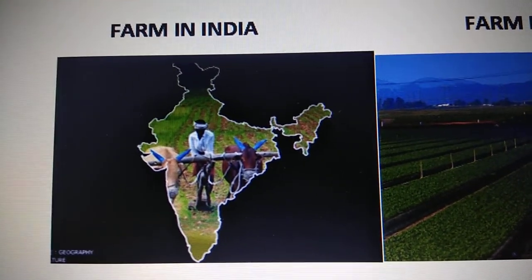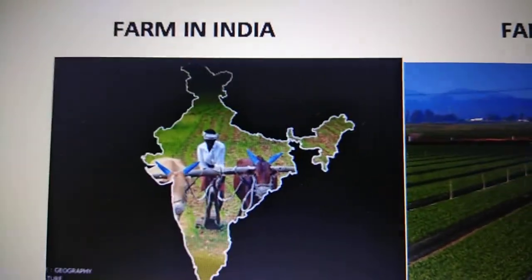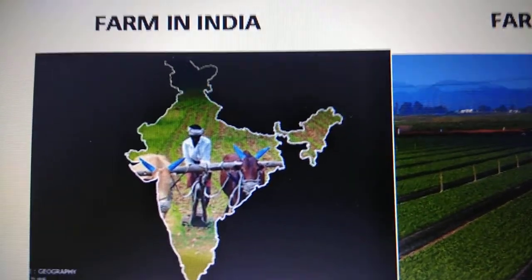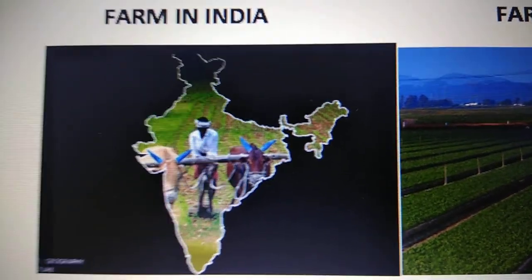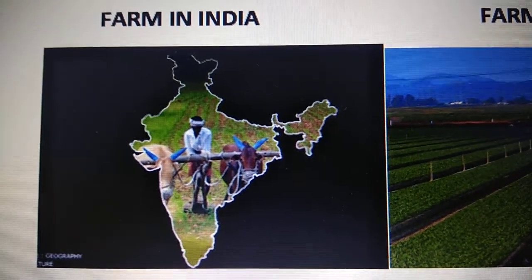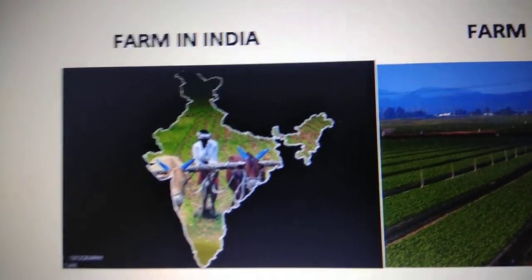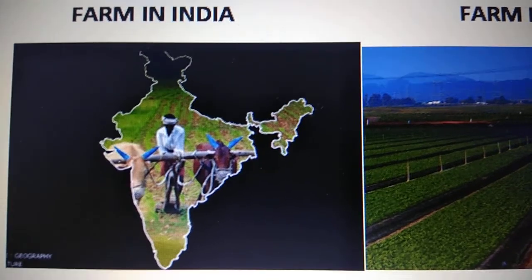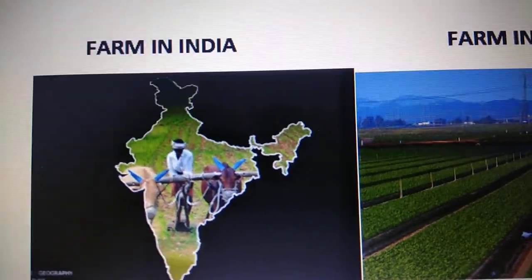Small land holdings exist because of the inheritance law applied in our country. For example, a farmer named Ramu has four sons, and after his death the land gets divided into four parts — each son will get a share. What happens is the land becomes smaller and smaller with each generation. These small lands are not very productive; you can grow only one or two crops mainly, and they are not productive or economical.